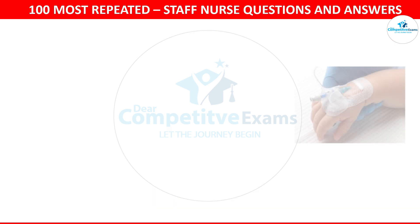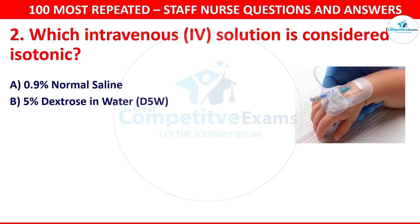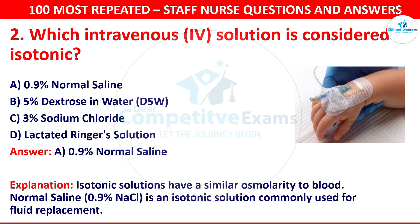Question 2. Which intravenous IV solution is considered isotonic? The options are 0.9% normal saline, 5% dextrose in water, 3% sodium chloride or lactated Ringer's solution. The correct answer is 0.9% normal saline. Isotonic solutions have a similar osmolarity to blood. Normal saline is an isotonic solution commonly used for fluid replacement.